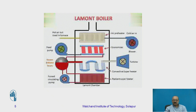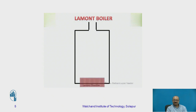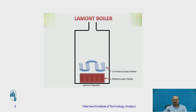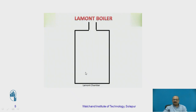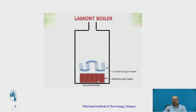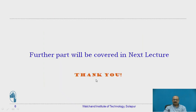Observing the working I have shown with animation, how exactly the operation takes place — the Laumont boiler has an air preheater, economizer, superheater, and radiant heater. The major difference is that the water is not going to accumulate in the pipeline because the water is going to be circulated at a higher pressure. Further studies, you are going to be referring to the next lectures. Further parts will be covered in the next lecture. Thank you.